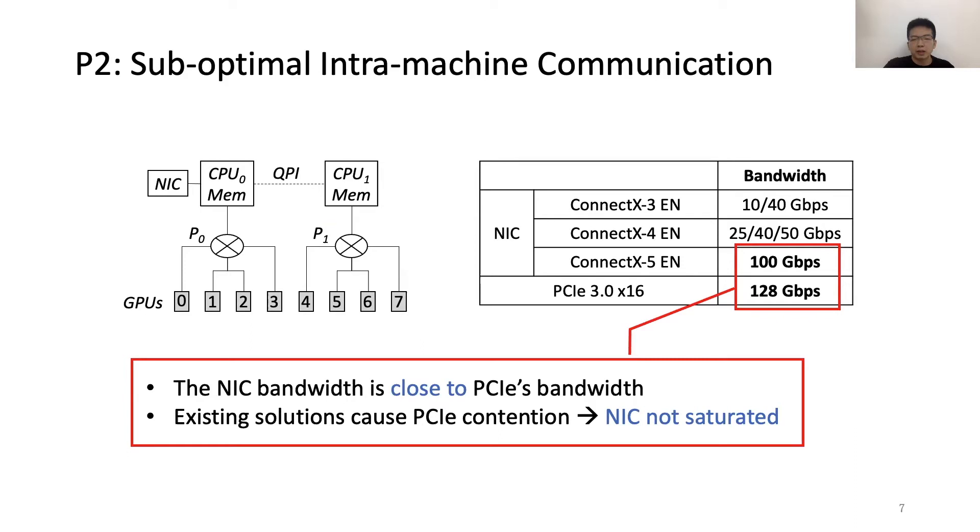Compared to the past when the NIC is the only bottleneck, now the PCIe can also be the bottleneck. But current intra-machine solutions do not timely address this problem, and they will cause PCIe contention, which prevents the NIC from saturating its maximum bandwidth. This motivates us to consider the intra-machine topology carefully.